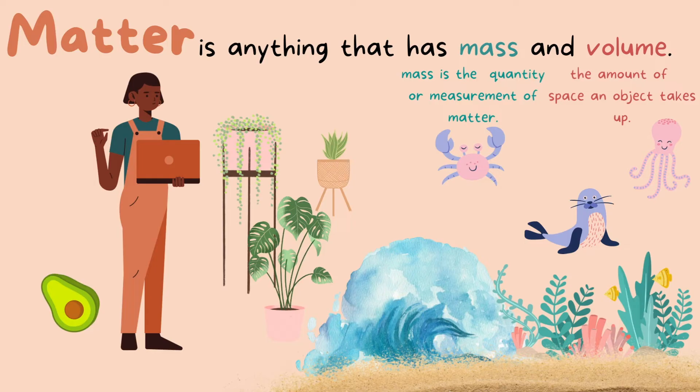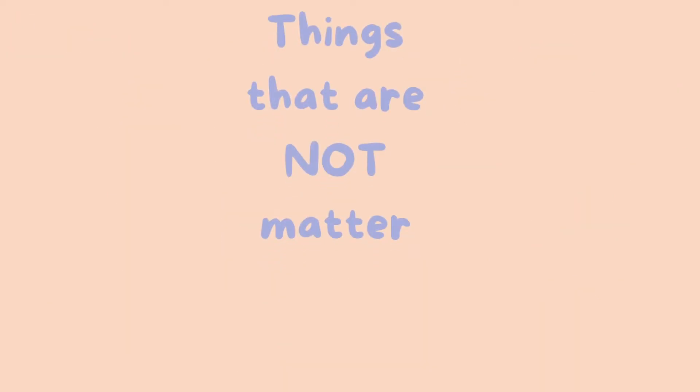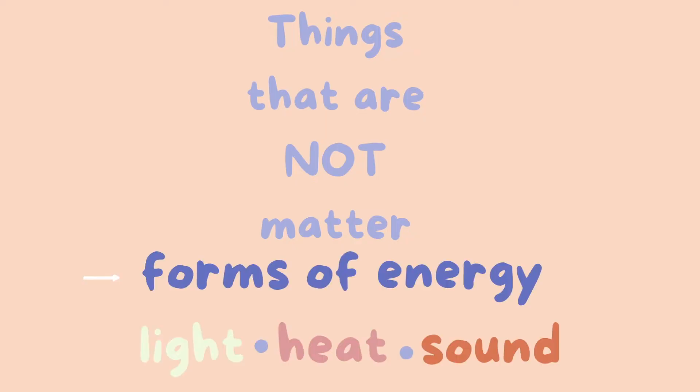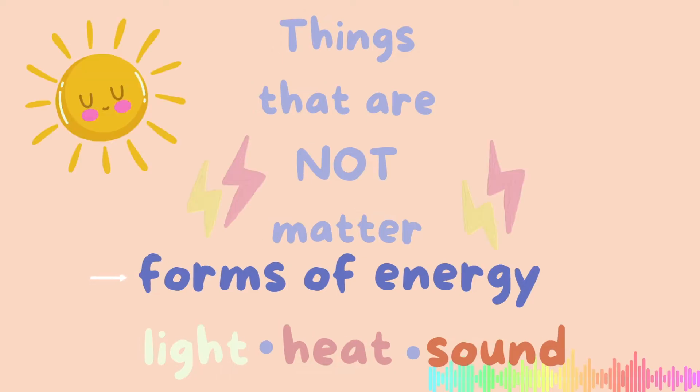Almost everything you can think of is matter, but there are a few things that are not matter. Those things are forms of energy, like light, heat, and sound. So what does not matter are forms of energy. Like the sun rays that give off heat and light, these are not matter. Lightning and thunder give off forms of energy like light and sound, and these are not matter. They are forms of energy.